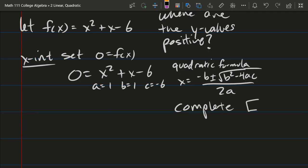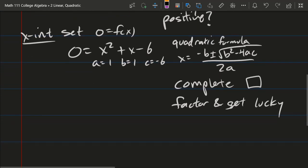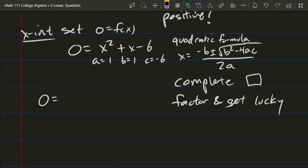The reason I'm not going to complete the square is because we have to take half of the x coefficient, which would be in this case 1 half, and I don't like fractions very much. So I avoid them whenever I have the possibility to do so. And the third option is factor and get lucky.